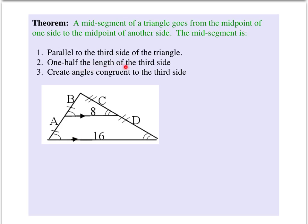The length is half the length of the third side. In other words, if this is 16, this must be 8 or half as long. And then the angles that are created are going to be congruent to the third side.